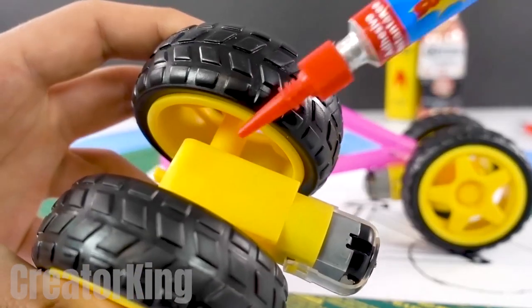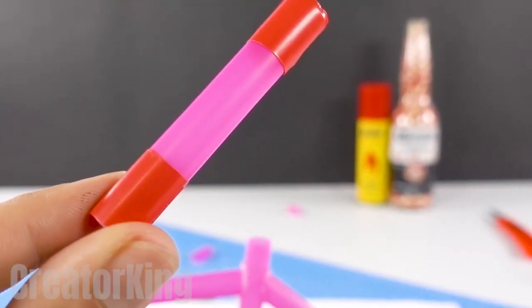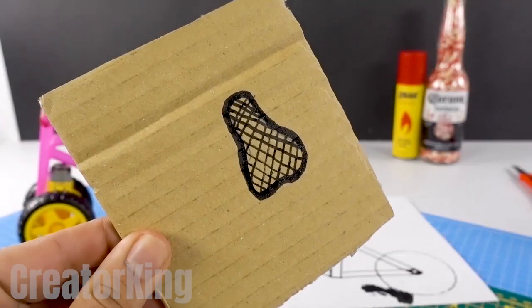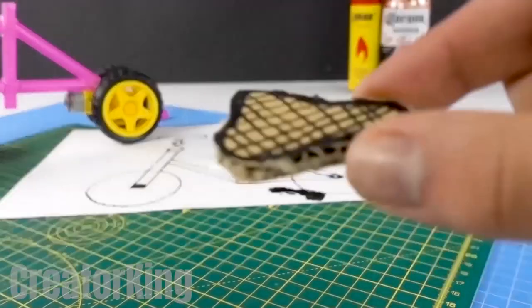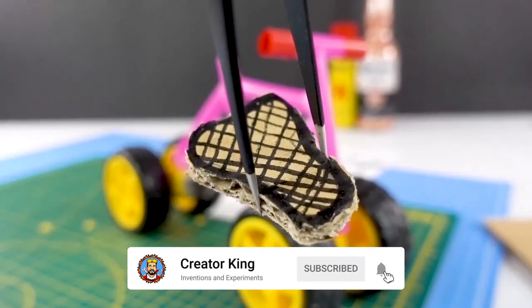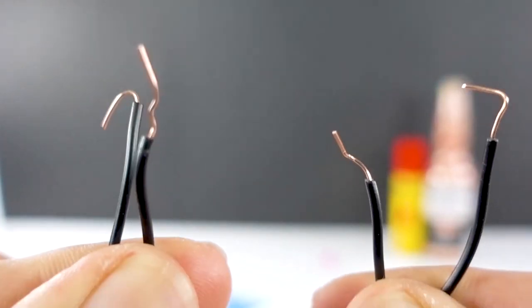To give the design of our car a more complete look, place a handlebar made of straw and tape. Then draw the seat on a piece of cardboard and cut it out. Carefully glue it to the part you see on the screen. All that remains is to finish the electrical system.